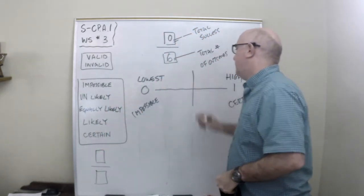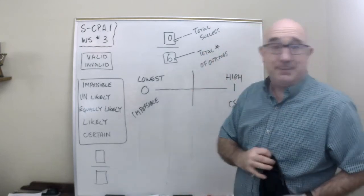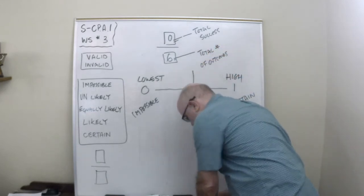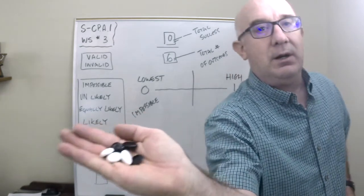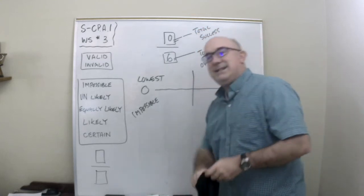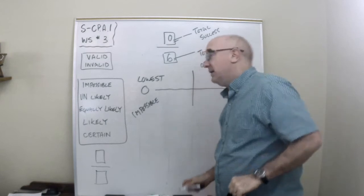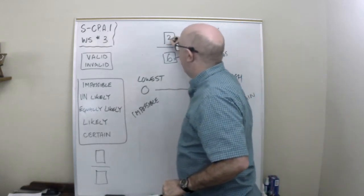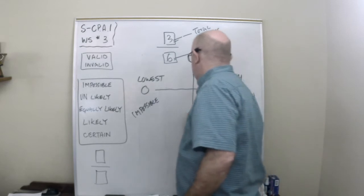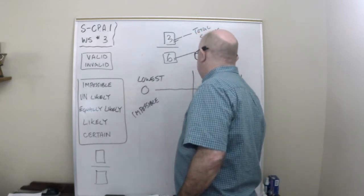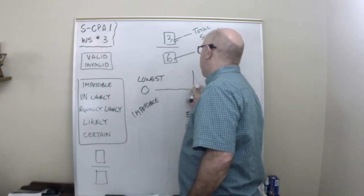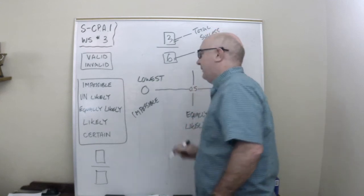Now at the midway point, let's take those six out and put in three black and three white. What's the chances of getting a black? It's three out of six. What's the chances of getting a white? Three out of six. We call that equally likely — right there at 50%, or 0.5.